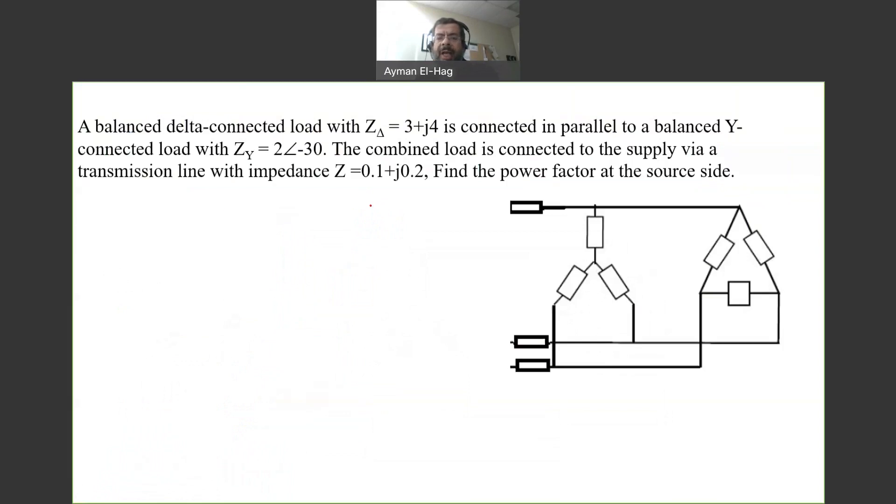So here we have this question. We have Z_y, the Y-connected load with an impedance equal to 2 angle of minus 30. We have a delta-connected load equal to 3 plus j4, and the line is 0.1 plus j0.2. This here is the source side, which was not specified if it is Y or delta. The question asks, what is the power factor at the source side?